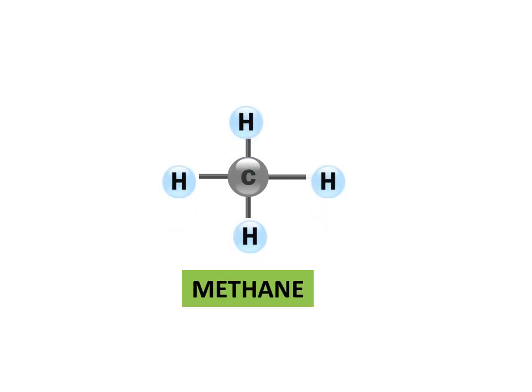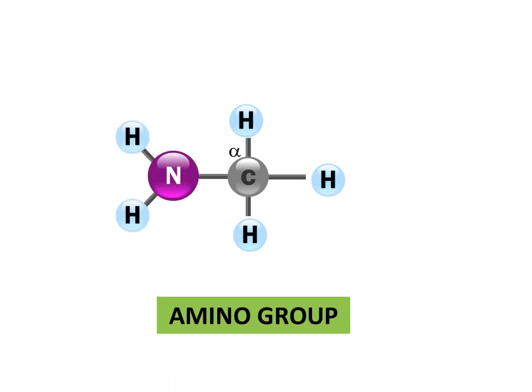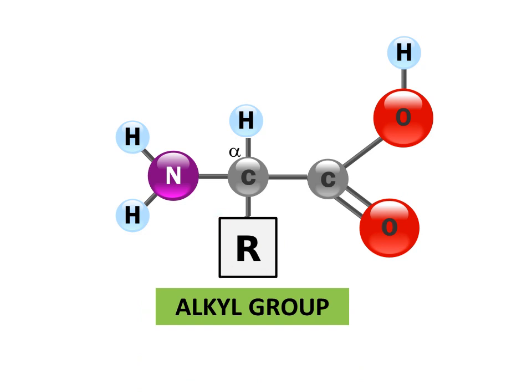All amino acids are basically derivatives of the simple organic compound methane. Each methane molecule has a central carbon atom — which we will call the alpha carbon — to which 4 hydrogen atoms are attached. When one hydrogen atom is replaced by an amino group (NH2), the second by a carboxylic group (COOH), and the third by an alkyl group, represented by R because it may vary from amino acid to amino acid.